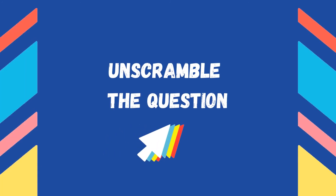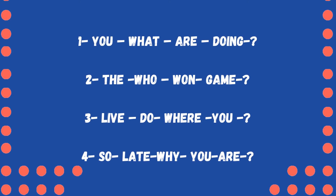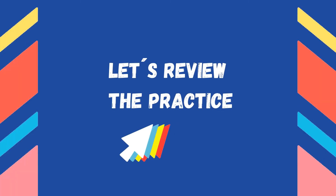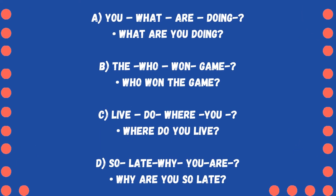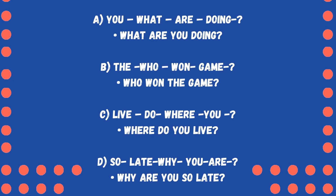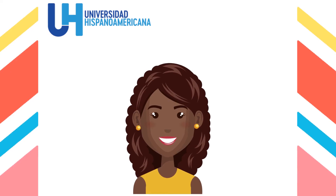Practice number two — unscramble the question. According to the correct structure of forming WH questions, place each word in its respective place to form a correct question. Let's review the correct answers. A: 'What are you doing?' B: 'Who won the game?' C: 'Where do you live?' D: 'Why are you so late?'